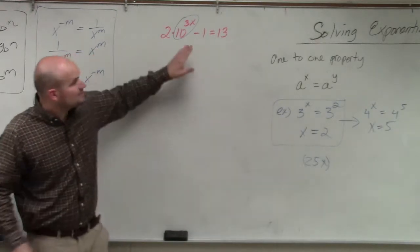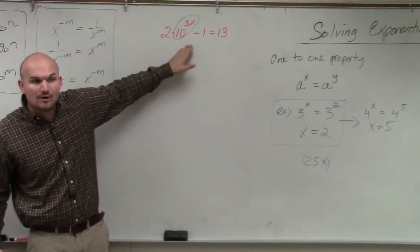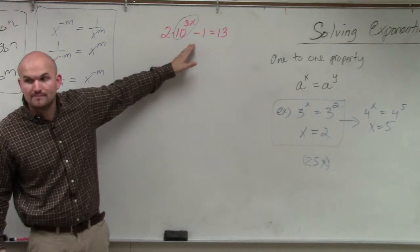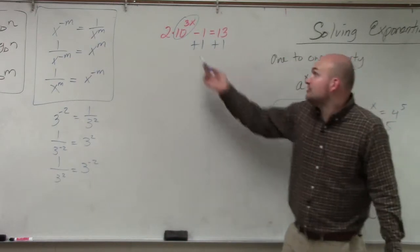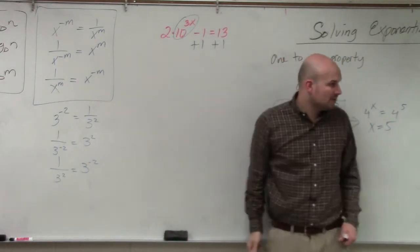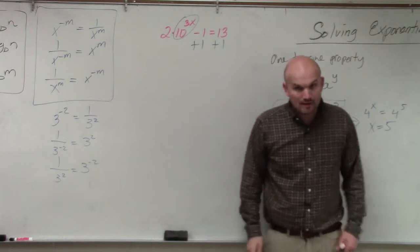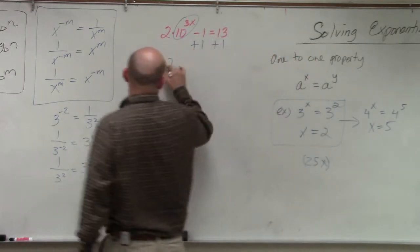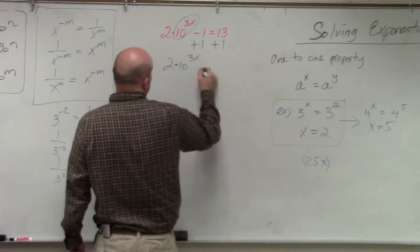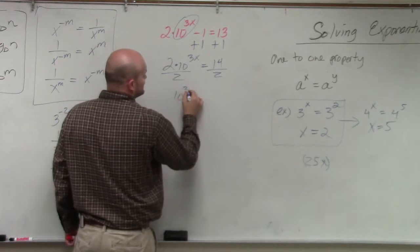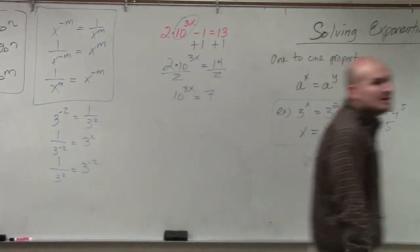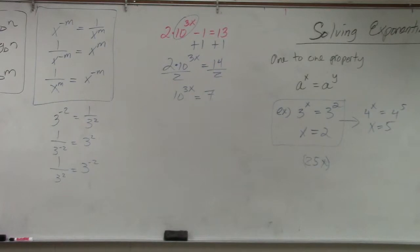So what we need to do is solve for this exponent. Okay? So you're going to add one. You're going to undo what's happening. You can see my exponent is being subtracted by one and it's being multiplied by two. You should know how to solve for these. You add one, then I have 2×10^(3x) equals 14. Then I divide by two. So I have 10^(3x) equals seven. So you guys see what I did. This wasn't anything crazy. You guys did this stuff at the beginning of the year. All you're doing is undoing what's happening to the exponent.